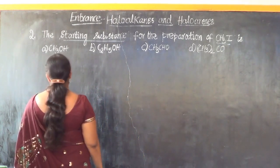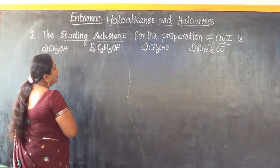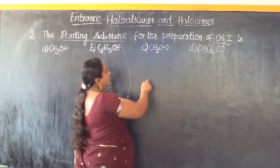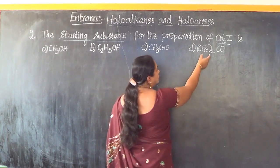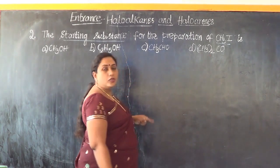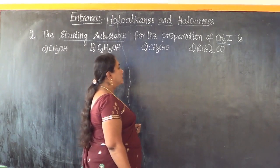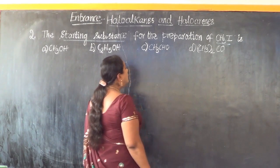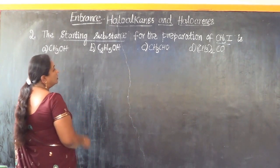Let us look into all the different options. Option A is methanol. Option B is ethanol. Option C is acetaldehyde or ethanal. Option D is propanone or acetone — that is a ketone. Now let us look into the reaction.